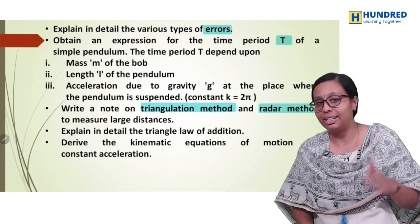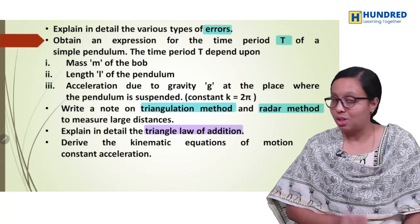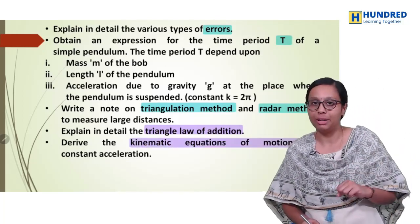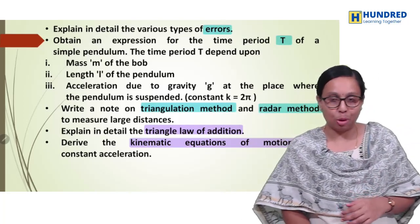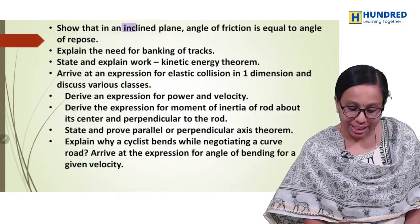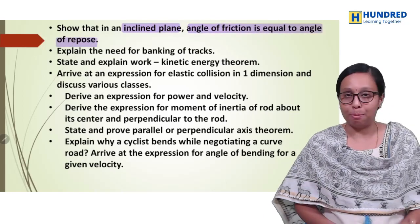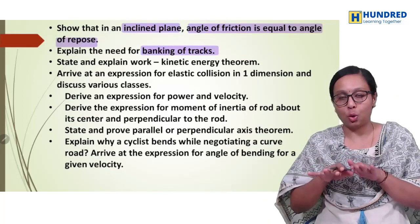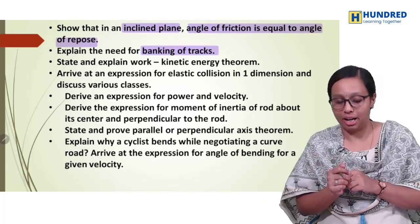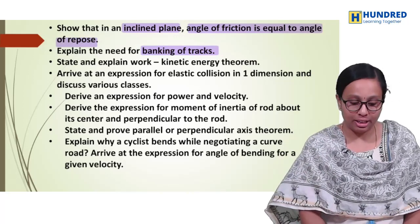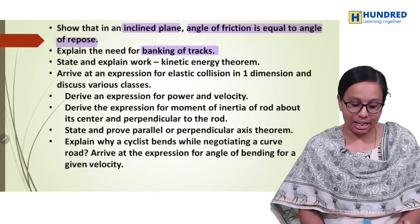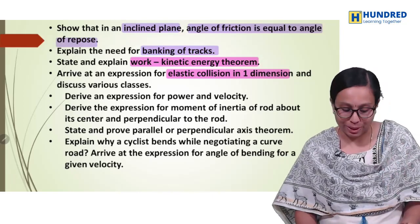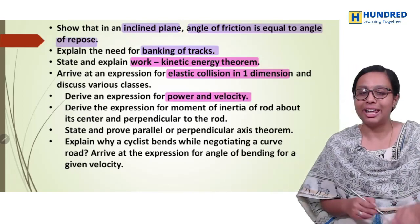In the second chapter, we have very important board exam questions from last year and kinematic equations of motion derivations — these two are important. Third chapter: show that in an inclined plane, angle of friction is equal to angle of repose — this is last year's question. Then, what is the need for banking of roads? This is very important. We also have work-energy theorem, work-kinetic energy, elastic collision in one dimension, and power and velocity expression — a very easy question asked in last year's board.